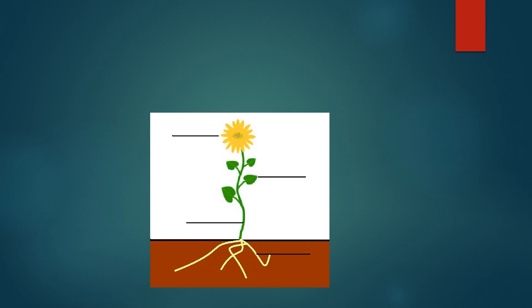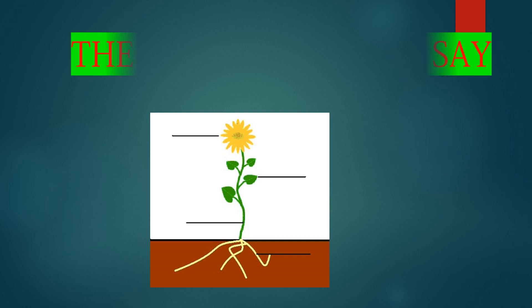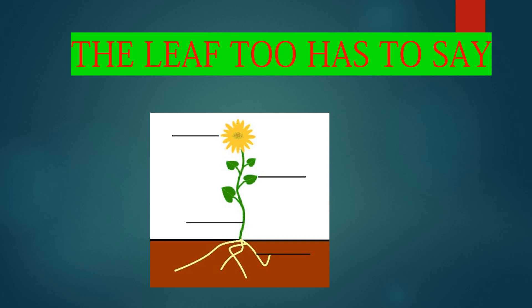Hi dears, welcome back to my channel. In the second chapter, we will discuss the parts of a plant. What are the parts of a plant? Roots, stem, leaves, flowers and fruits.